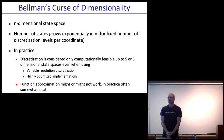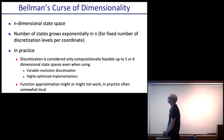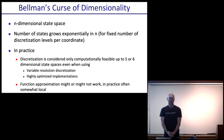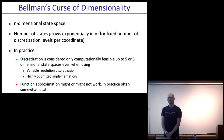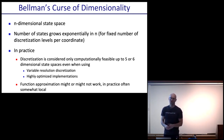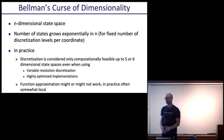There's this thing called Bellman's Curse of Dimensionality. If you have an n-dimensional state space, the number of states will grow exponentially in dimension n. With 10 discretization levels per dimension, you have 10 to the n total states. As n gets even medium-large, 10 to the n can already be pretty big and hard to cycle over. In practice, discretization is considered computationally feasible only up to five or six-dimensional state spaces, even with variable resolution and highly optimized implementations.